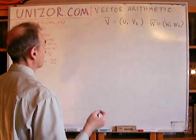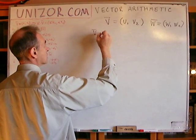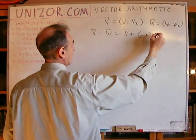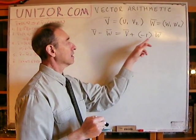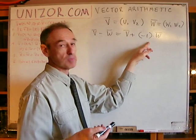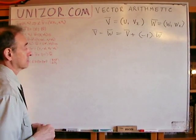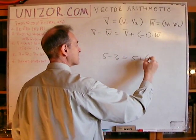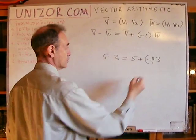From the two previous problems I would like to prove that subtracting a vector is exactly the same as adding the vector which is opposite in direction and same in length — that is, multiplication by minus one and then addition. It's just like with numbers: 5 minus 3 is exactly the same as 5 plus (minus one times 3), which is minus 3.